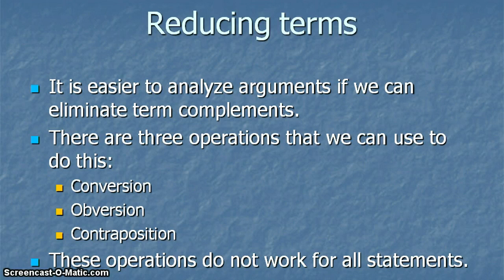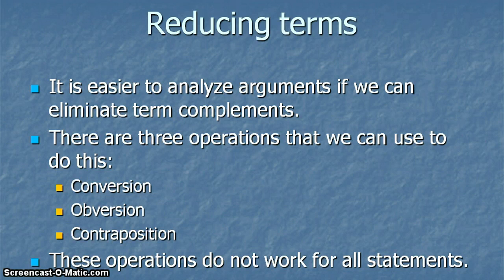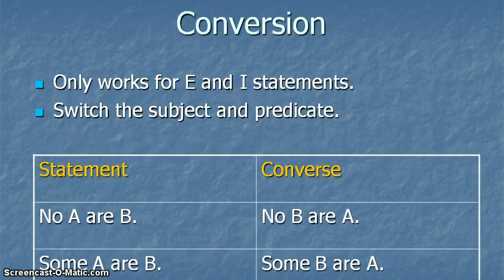When we're looking at arguments, if you see something like an A statement which cannot be used with conversion, and the conclusion is all A are B with the conclusion all B are A, it's going to be invalid because conversion can't be used with an A statement. However, if you have no B are A and the conclusion is no A are B, that's conversion and that would be valid. But I'm getting ahead of myself.